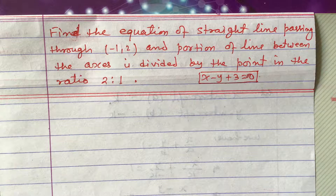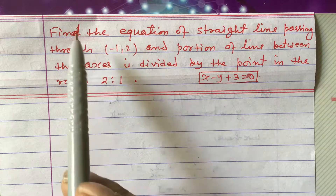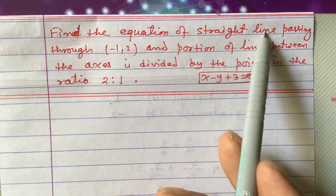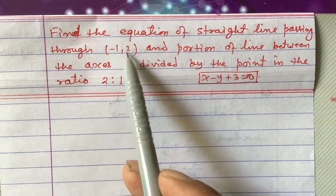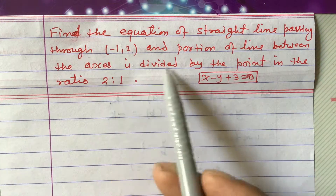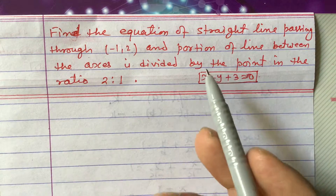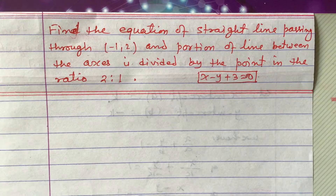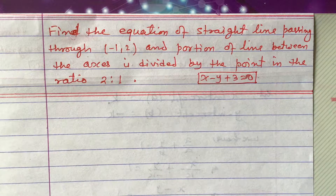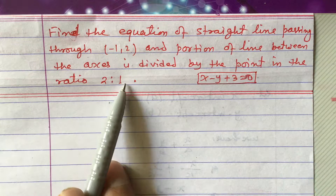Dear students, today I'm going to teach you one question related to the equation of a straight line. Find the equation of a straight line passing through minus 1 comma 2, and the portion of the line between the axes is divided by the point in the ratio 2 is to 1. This is similar to the previous one, but here the ratio is given instead of the midpoint.